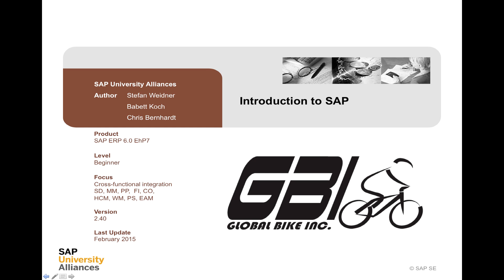Welcome to this introduction to SAP. SAP ERP 6 Enhancement Pack 7 is at the core of what we teach, showing you how an enterprise resource planning system works, and we do it using Global Bike Incorporated data sets for each of the modules. Global Bike Incorporated 2.4 is the latest version, and that provides us with all the data for a large multinational bicycle manufacturing company.